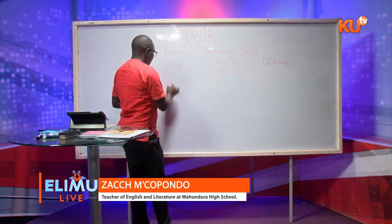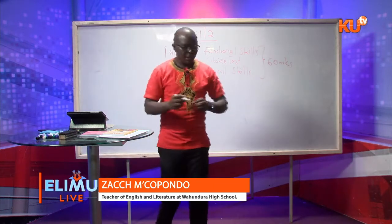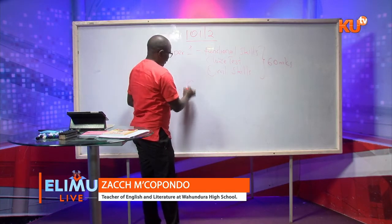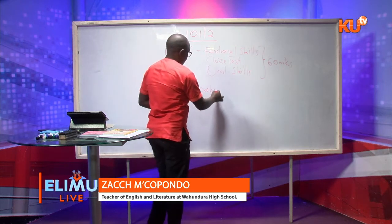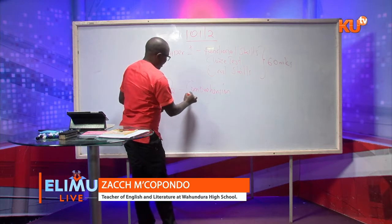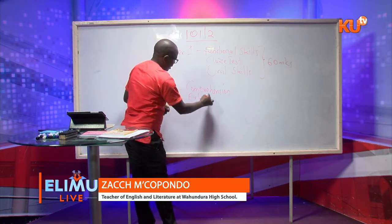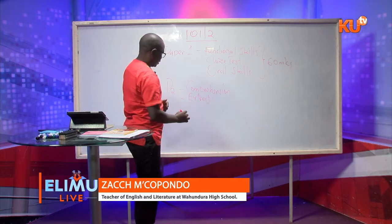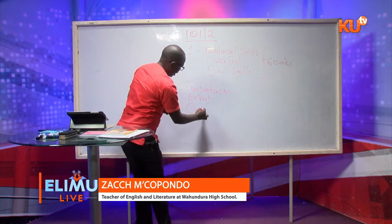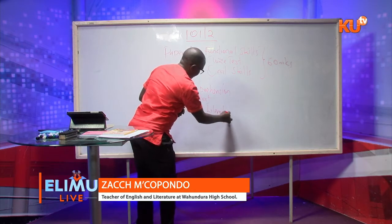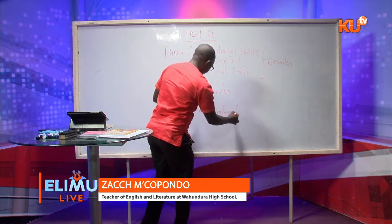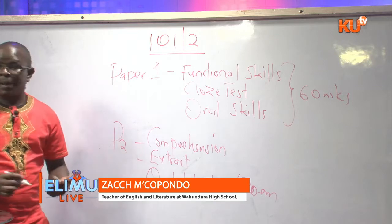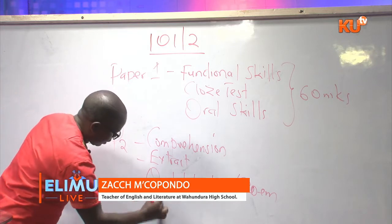Then Paper 2, the paper that we're focusing on today, carries 80 marks and this paper is divided into four different categories. That is where we have the comprehension, then we have an extract from a compulsory set text. Then the third question of this paper is either oral literature or a poem. And then the fourth part of this paper is grammar.